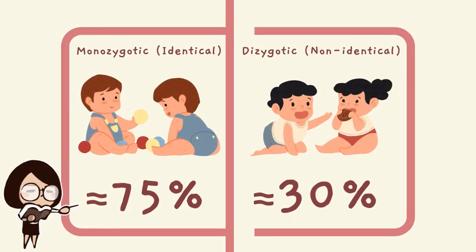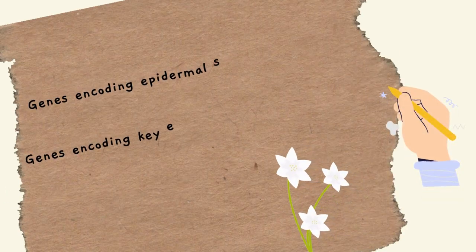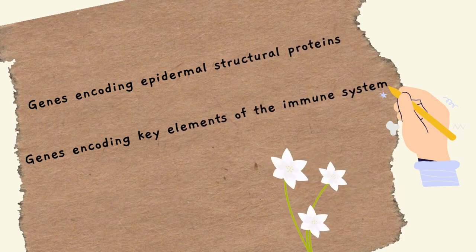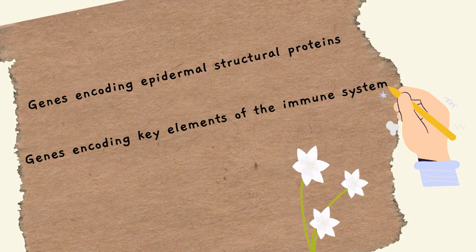There has been a correlation of atopic dermatitis with genetics. One example would be the concordance rate in monozygotic twins, or identical twins — fertilization by one single ovum and one single sperm that splits into two — which is around 75%, whereas the risk in dizygotic twins, or non-identical twins, which is fertilization of two ova by two sperms, is only around 30%. This indicates a high association with genetic background. There are many genes linked with atopic dermatitis, specifically genes encoding abnormal structural proteins and genes encoding key elements of the immune system.